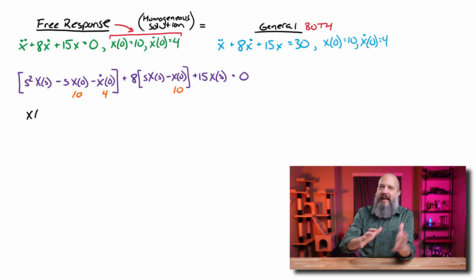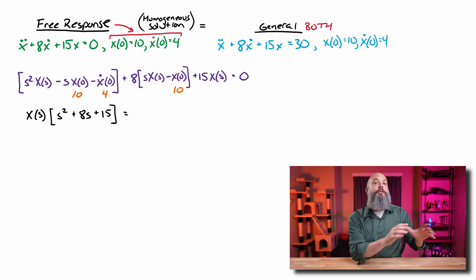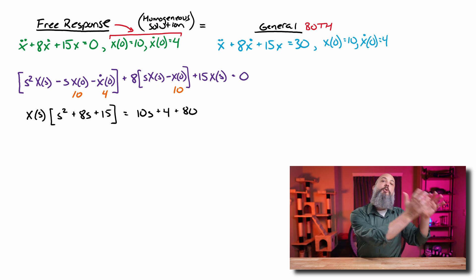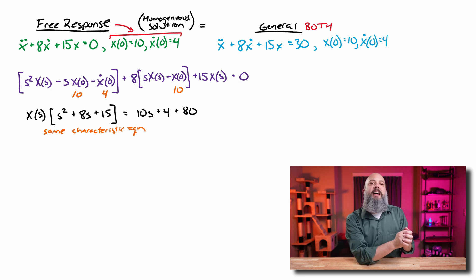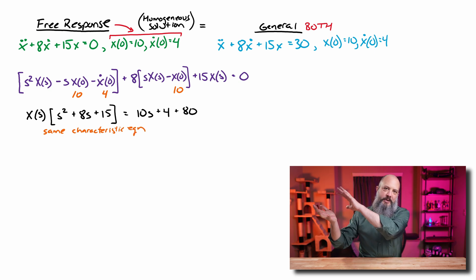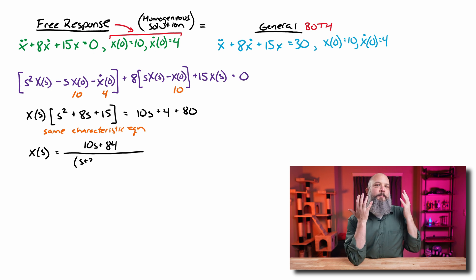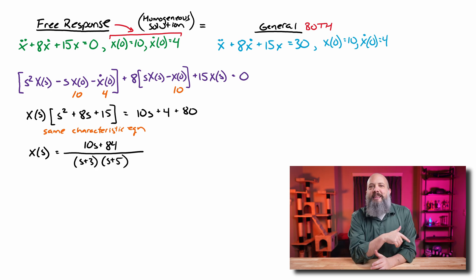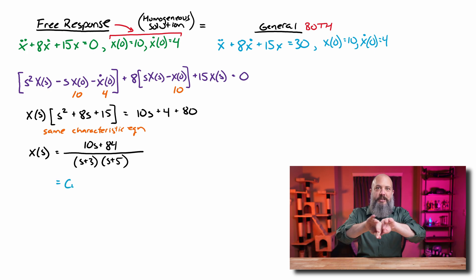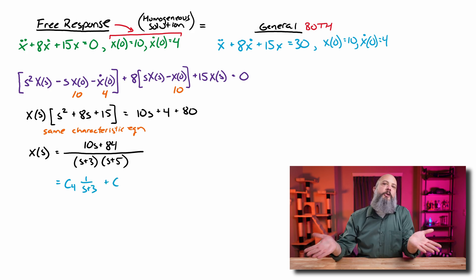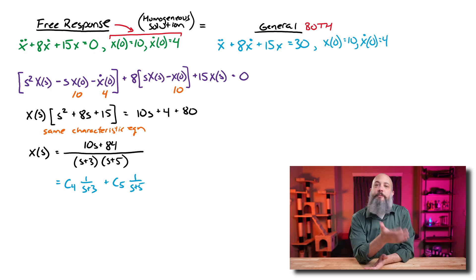Moving to the next step, I collect all the X of S terms on the left side. All of the initial condition terms get moved to the right-hand side: 10S, 4, and 80 (the 8 times 10 is 80). Then we take the big division step, divide all the X of S terms over, and we're left with the big denominator. We factored this already: S plus 3 and S plus 5. So the partial fraction decomposition goes to 1 over (S plus 3) and 1 over (S plus 5), which we already confirmed are in the Laplace transform table.